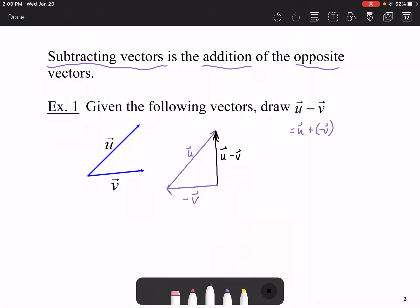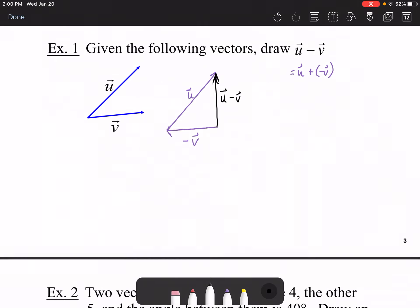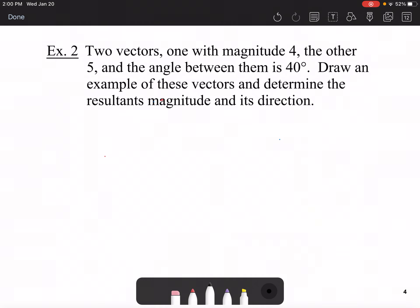Make sure you have a calculator handy. Make sure your calculator is in degree mode, as we're going to use that information to calculate. Here, two vectors, one with magnitude 4, the other one with 5, and the angle between them is 40 degrees. We're going to draw an example of these two vectors, and we're going to determine the resultant magnitude and velocity and direction.